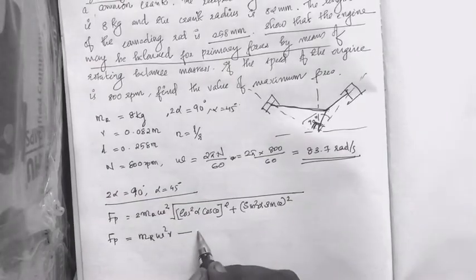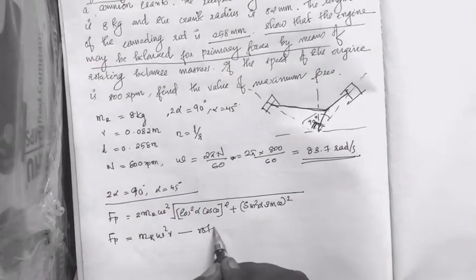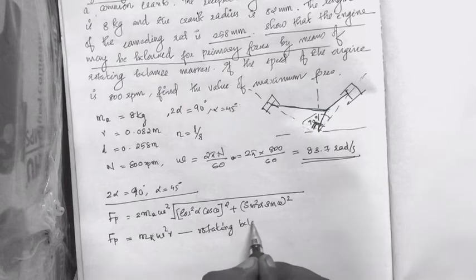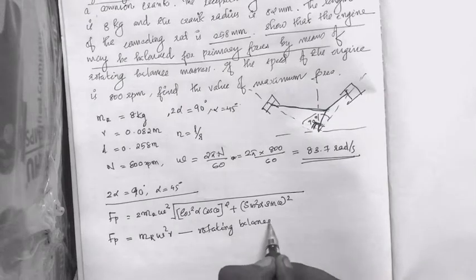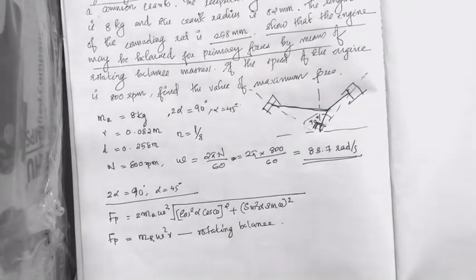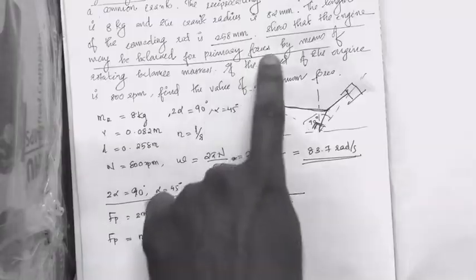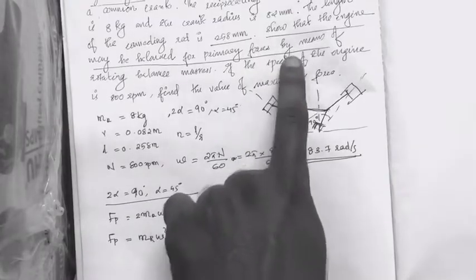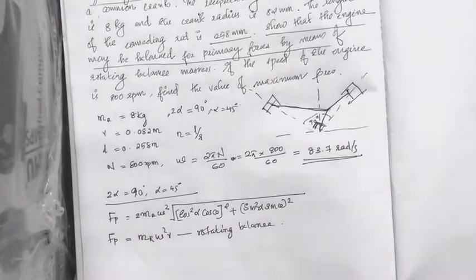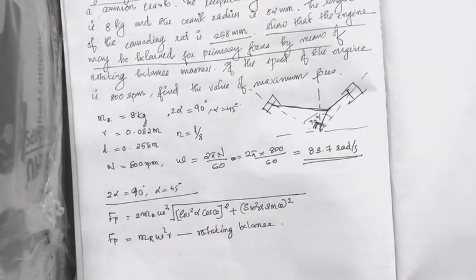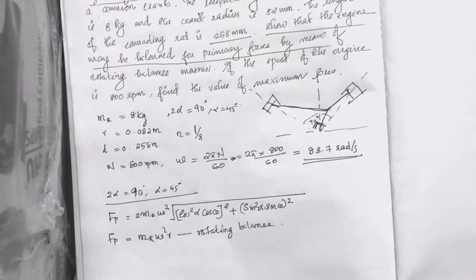Now we consider rotating mass. The rotating balance mass in the balancing condition is used to show that the engine may be balanced for primary forces by means of a rotating balance. The rotating mass in balance gives the same result as the primary force.